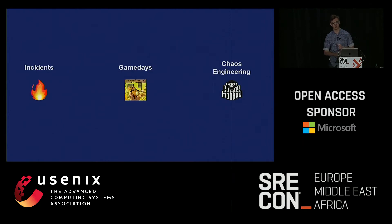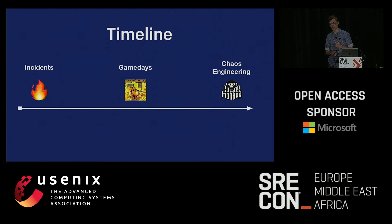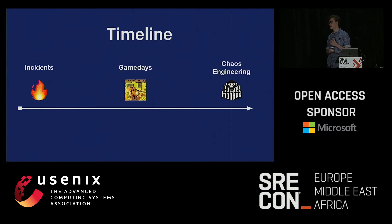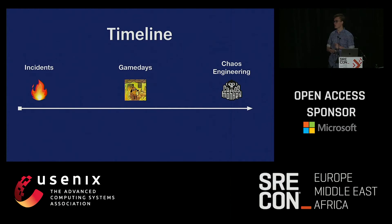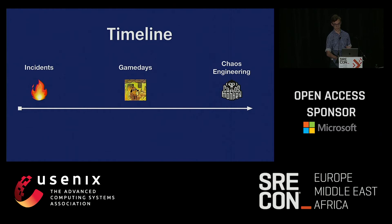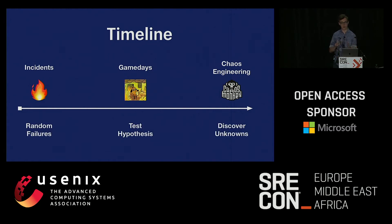These three kinds of resiliency reasoning tools fit on a timeline — perhaps the maturity of your organization. When your application first starts off, you're going to have incidents whether you like it or not. As time goes on, you'll build a more valuable product and start running game days to test resiliency features. When resiliency actually matters from a business concern, you want to start testing resiliency features. Then, as you have less low-hanging fruit to fix, that's when you want to adopt chaos engineering to discover weird edge cases.